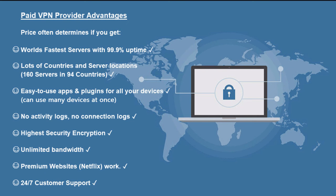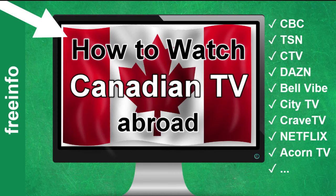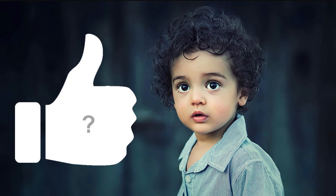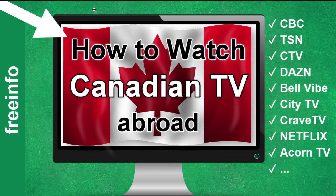Good VPNs have a lot of advantages: super fast servers in many countries, easy-to-use apps and plugins for all devices and browsers — which is quite amazing if you know how difficult it is to program good software for a lot of devices. There are no activity logs, no connection logs, highest security encryption, unlimited bandwidth, and it works with premium websites such as Netflix. They also have customer support just in case something's not working. So I hope now you can watch Canadian TV abroad again. If you like this video, please give me a thumbs up and have fun watching your Canadian TV series and shows from anywhere on the planet.